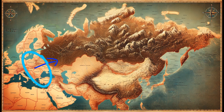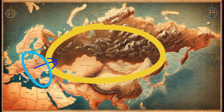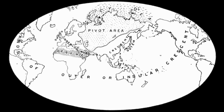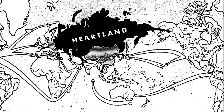He famously stated: "Who rules East Europe commands the heartland; who rules the heartland commands the World Island; who rules the World Island commands the world." Mackinder's World Island referred to the combined territories of Europe, Asia, and Africa — an interconnected landmass rich in resources, manpower, and economic potential. Mackinder's idea was revolutionary because it shifted strategic focus from the maritime dominance of previous centuries to the potential power that could come from controlling land.